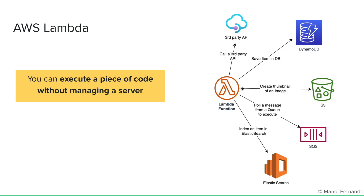Here's another example. Imagine that someone uploaded an image into an S3 bucket and you wanted to create a thumbnail of that image. The image may be high quality, but you want to create a thumbnail. You can write a Lambda function so that as soon as an image is uploaded to the S3 bucket, it invokes the Lambda function and creates a thumbnail. After that, the thumbnail can be stored in the same S3 bucket.